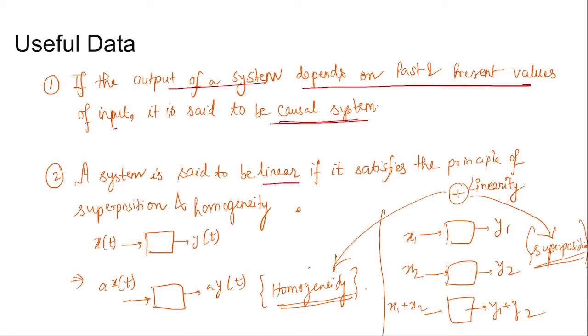If the system is linear, then it satisfies the principle of superposition along with the principle of homogeneity. Principle of homogeneity states that for x(t) input and y(t) output, if a·x(t) is the input, then the output will be a·y(t). For superposition, if x1 is input and y1 is the output, x2 is input and y2 is the corresponding output, then for inputs x1 + x2, the output will be y1 + y2.